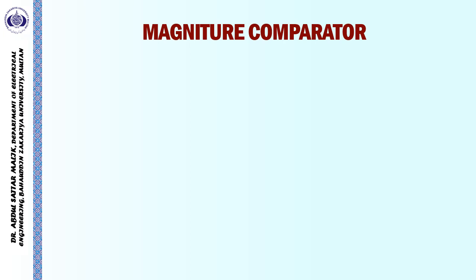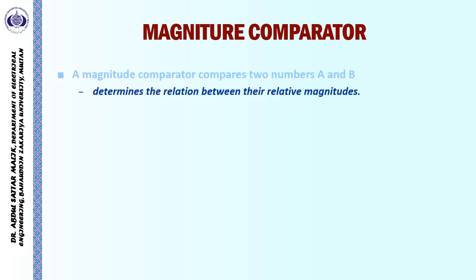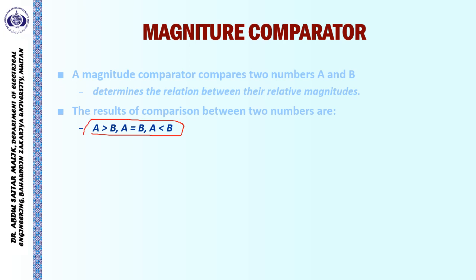Next, let us discuss the magnitude comparator. A magnitude comparator compares two numbers A and B and determines the relationship between their relative magnitudes. There are three possibilities: A is greater than B, A is equal to B, or A is less than B. In many applications we simply need the comparison result rather than performing a full arithmetic operation.